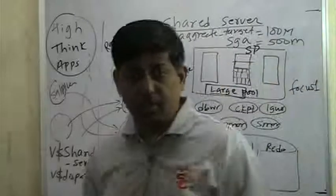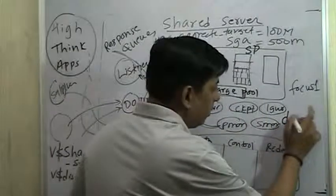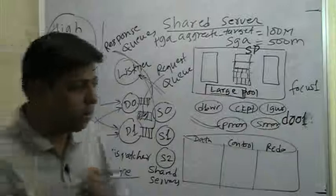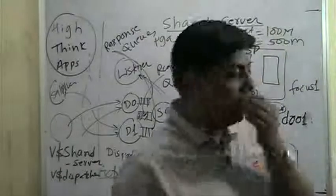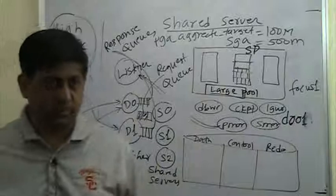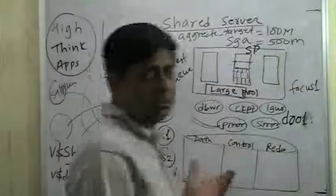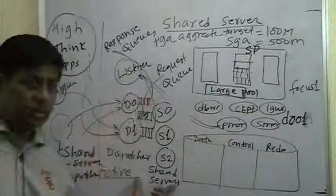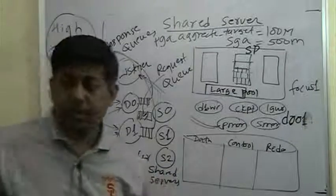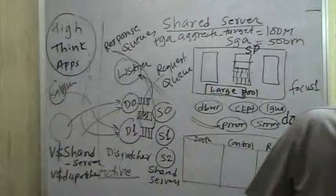If you type the ps -ef command, you will see all the processes - PMON, SMON, and also dispatcher processes named D000, D0001 and shared server processes named S000, S001. If the initialization parameters for shared server and dispatcher are set, your database is in shared server mode. With this discussion we will now see how to configure the database in shared server mode.